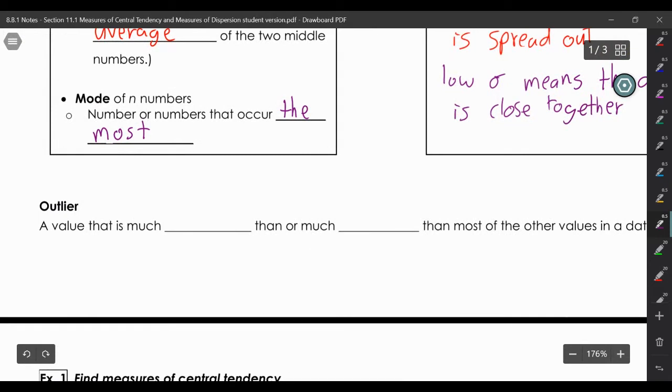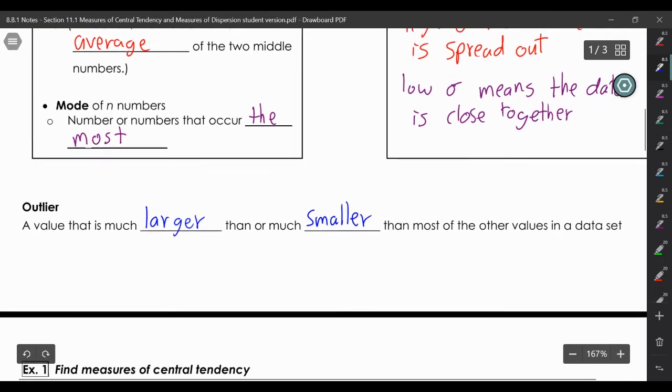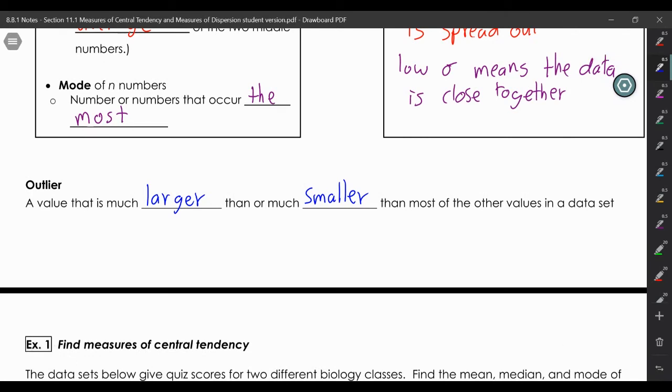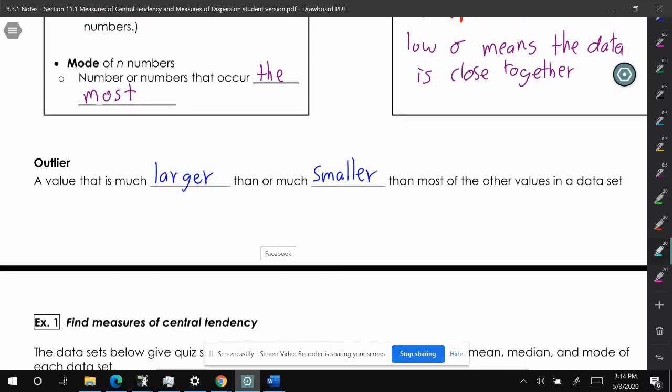And then the last definition is an outlier: a value that is much larger than or much smaller than most of the other values in the data set. Going back to the example of students' age in the school, most fall between 14 and 18. But if we get that really smart kid who somehow is in high school at age nine, that would be an outlier, something that is unexpected.